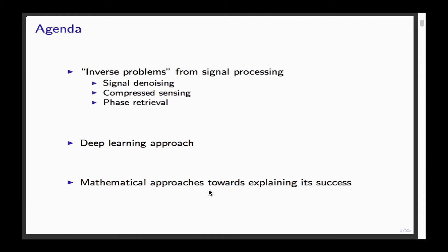I'm going to talk about some inverse problems — in quotes — because I'm not sure this is what you mean by inverse problems. These inverse problems come from signal processing, like signal denoising, compressed sensing, and phase retrieval. I'm going to talk about one deep learning approach that has to do with generative models and generative adversarial networks, and explain some mathematical ideas toward a theory for why these methods are successful.